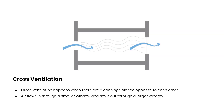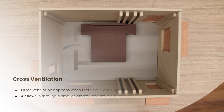Cross ventilation happens when there are two openings placed opposite to each other, where air flows in through a smaller window and flows out through a larger window.